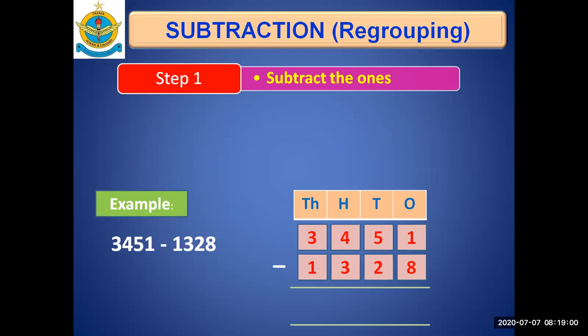First, we will subtract the ones. Now, in ones column, we have 1 and 8. The bottom number must be subtracted from top number. It's 8. 8 cannot be subtracted from 1. We have to identify can we subtract or not. If we cannot subtract it, it means we must take borrow from the left column.